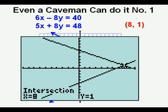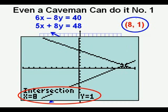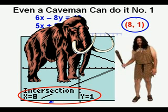We solve by pressing 2nd, trace, 5—and after 5 we have to wait for it to graph out—then enter, enter, enter. We see that this time Og has scored a perfect hit with his graphing method, and the answer is (8, 1). It looks like Og's day of eating rotten mastodon meat may soon be over.